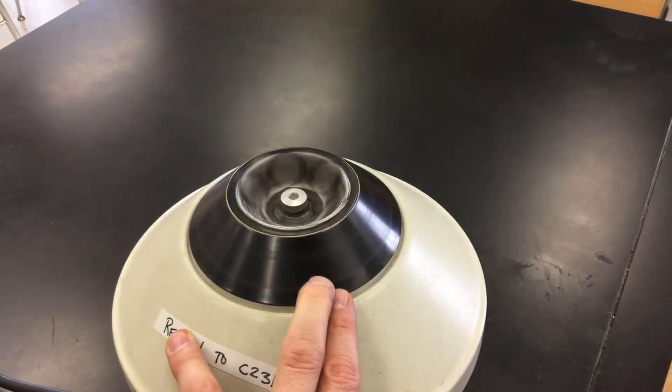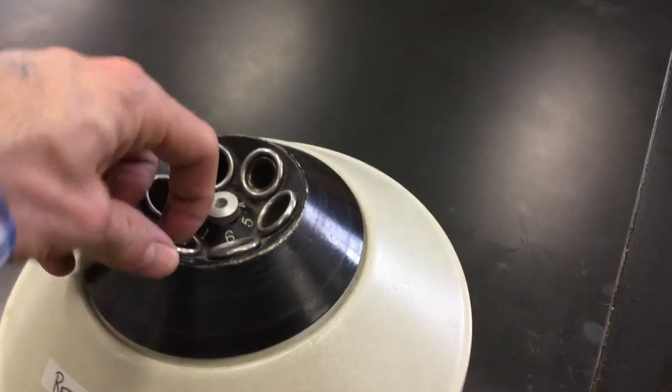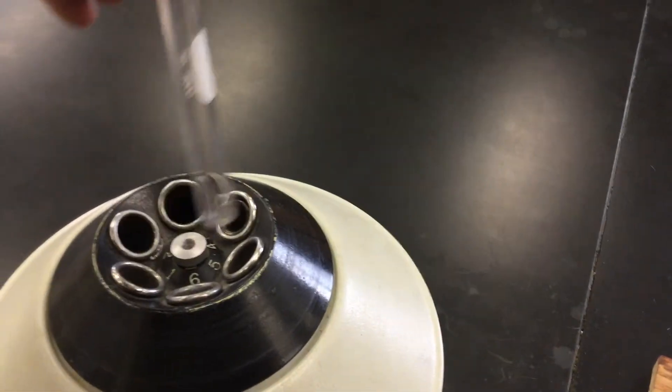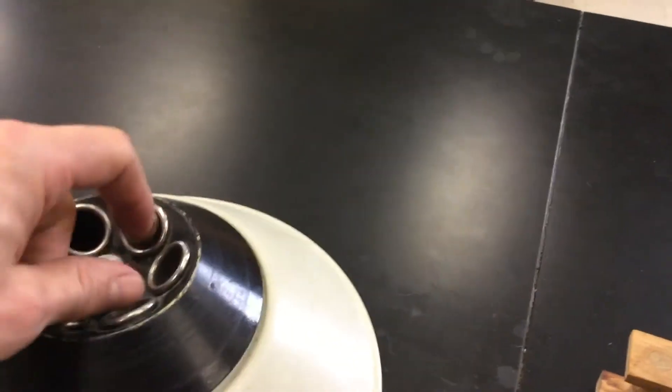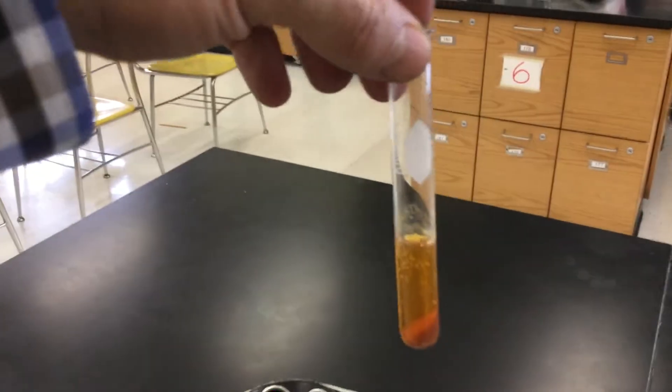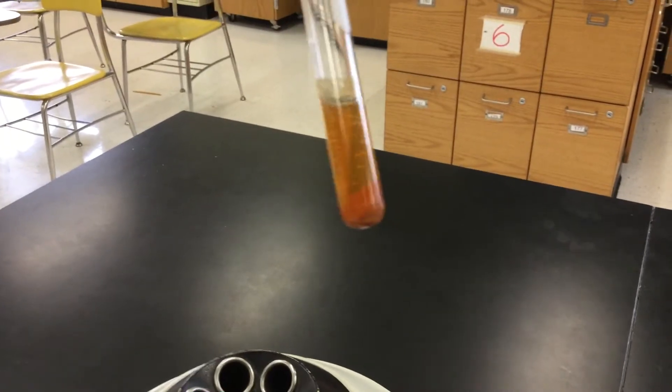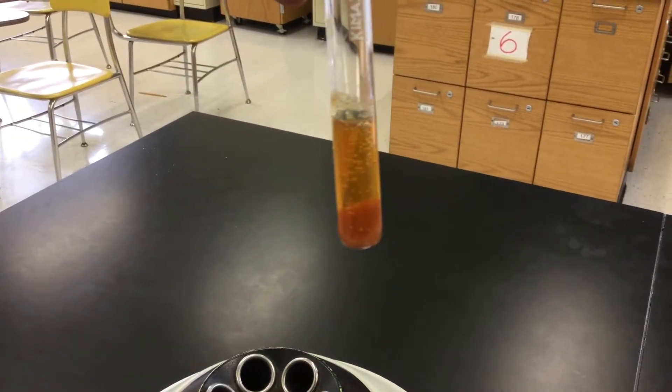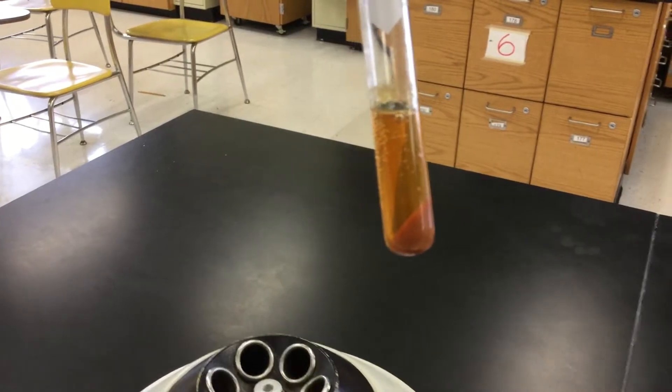Now I'm going to take my chemical out. So here's the empty test tube. I'll put that away there. And then here's the test tube now. And now you can definitely see that reddish brown solid has all clumped to the bottom because it's spun at a high rate.